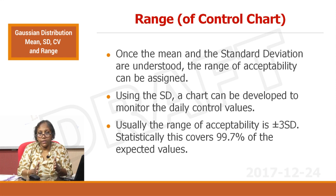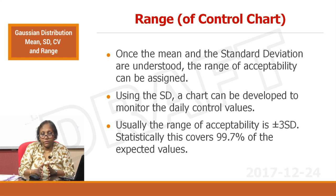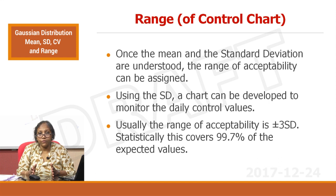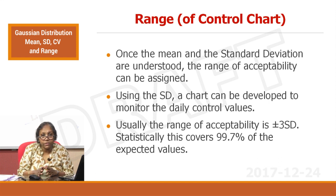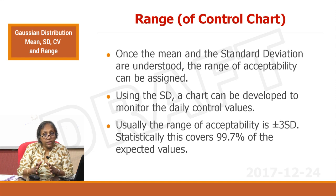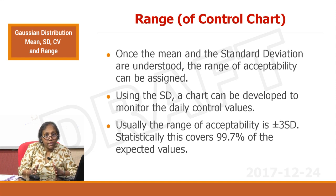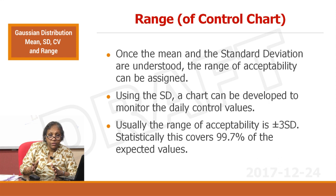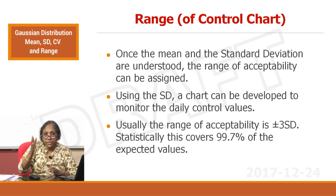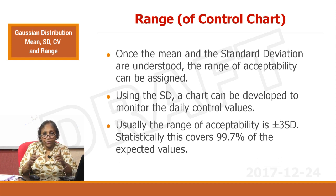Usually the range of acceptability is 3 SD. If you take 2 SD you may not be excluding that 5%. We said 2 SD only covers 95% of data points. Generally in the control chart, we will accept a run even if it is falling beyond the 2 SD line — so we take ±3 SD as the limits for the control chart.